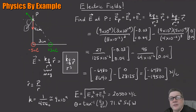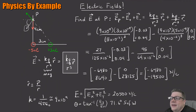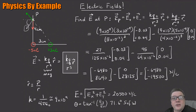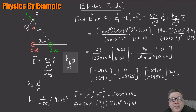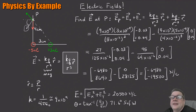We'll shorten this up as we do more examples, but this is how to find the electric field at a point due to a combination of point charges. If I had five point charges, I'd just have five vectors to add together — more tedious, but no more complicated. Find the vector for each one, add them all up, and you get the final vector. That's literally all there is to it.